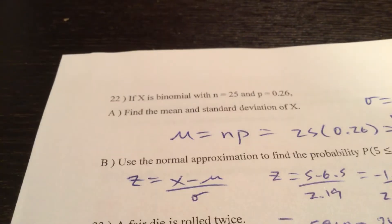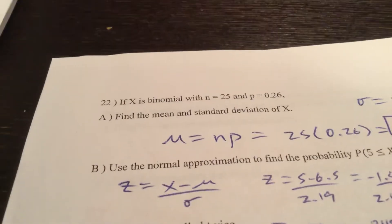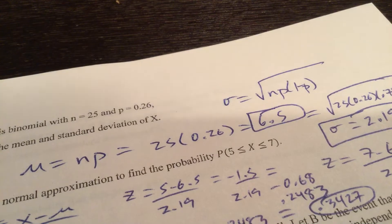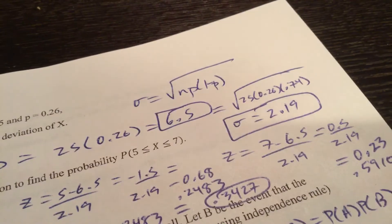22. If X is binomial with N 25 and P 0.26, find the mean and standard deviation of X. The mean is N times P. Standard deviation is the square root of N times P times Q. Q is 1 minus P. There you go.